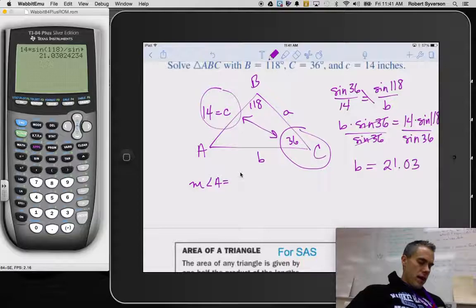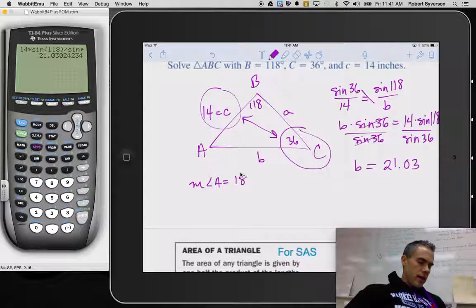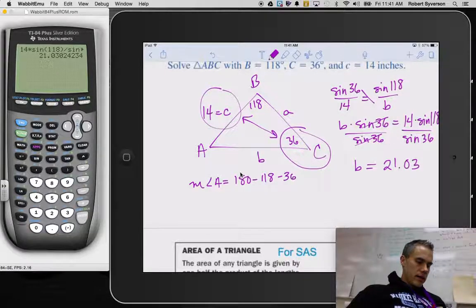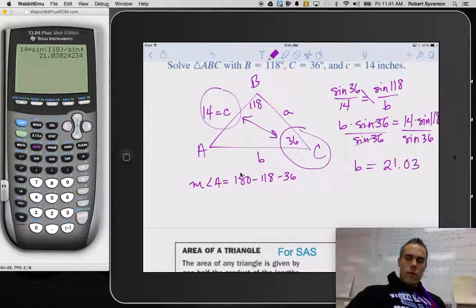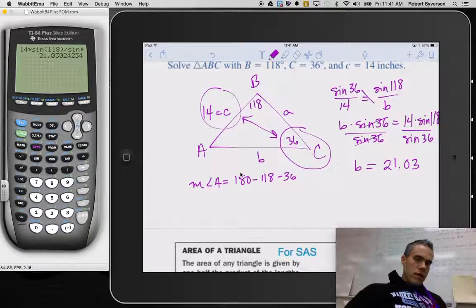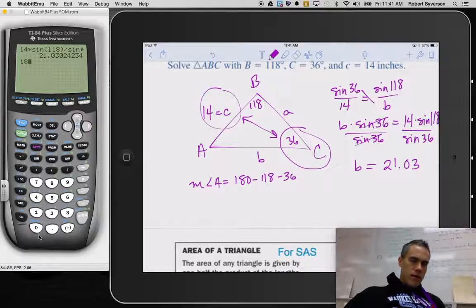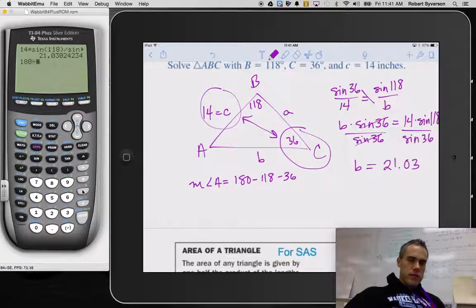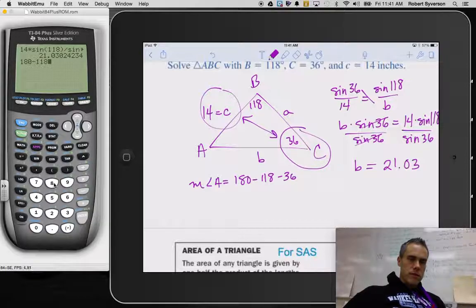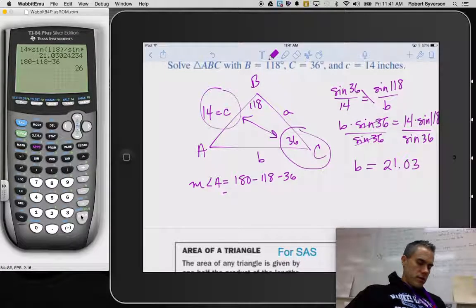So the measure of angle a will be 180 minus 118 minus 36. So what does that give me? Go over my calculator, 180 minus 118 minus 36. And we are left with 26 degrees. That's the measure of angle a.